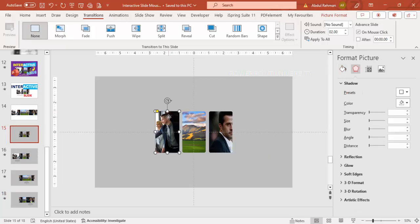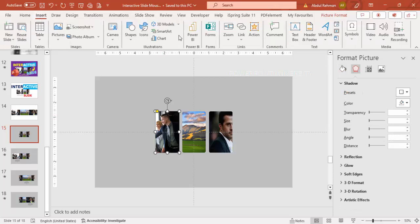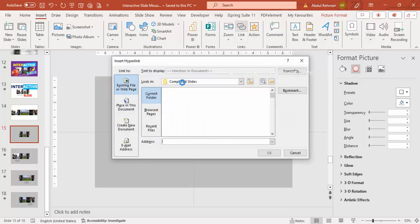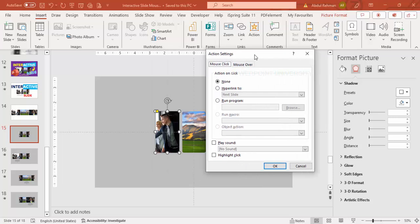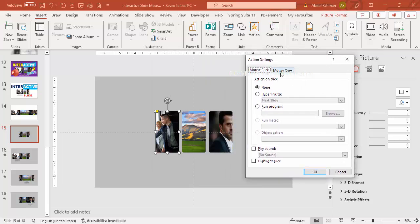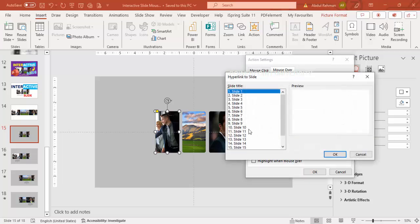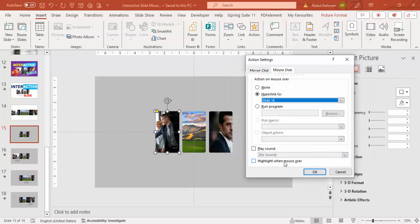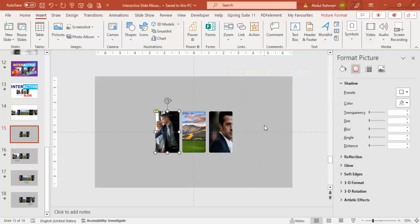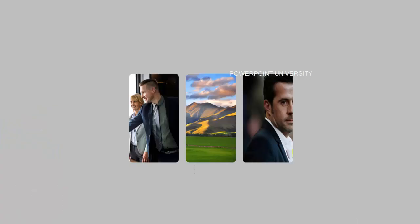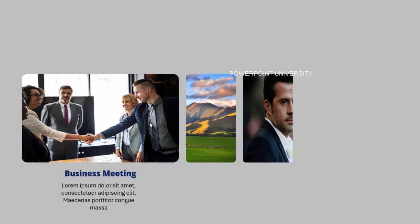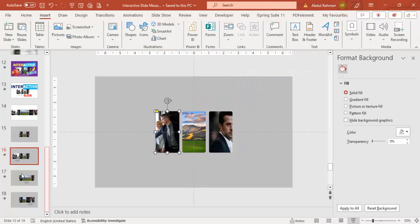On slide 15, select the first image, go to Insert > Action. There are two options: Mouse Click and Mouse Over — click Mouse Over. Set Hyperlink to: Slide, and select slide number 16. Also tick 'Highlight when mouse over' and click OK. This means when you bring your cursor over this image during the slideshow, it will immediately go to slide 16.